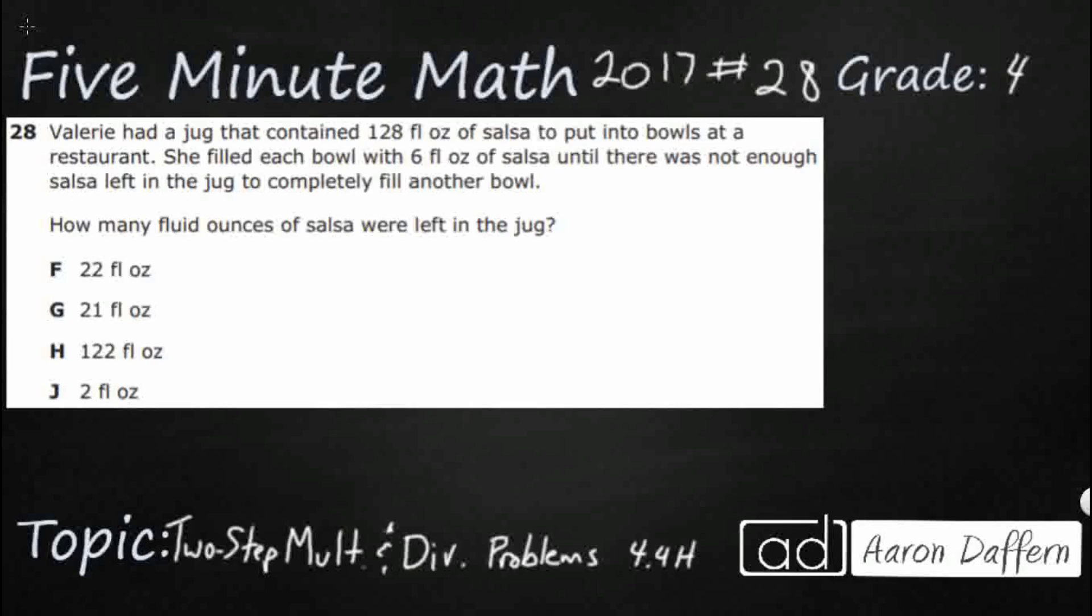So Valerie has a jug that contains 128 fluid ounces. That's a lot of salsa. She's gonna put them into bowls. If she filled each bowl with six fluid ounces until there was not enough salsa to completely fill another bowl. So each bowl is gonna have six fluid ounces. This lets me know we are dealing with equal groups because each of these bowls has exactly six fluid ounces. And so equal groups let us know we're gonna be dealing with multiplication or division. Those are inverse operations.